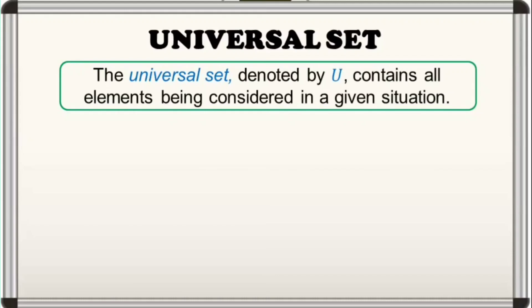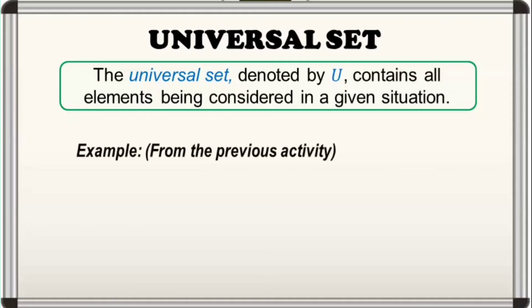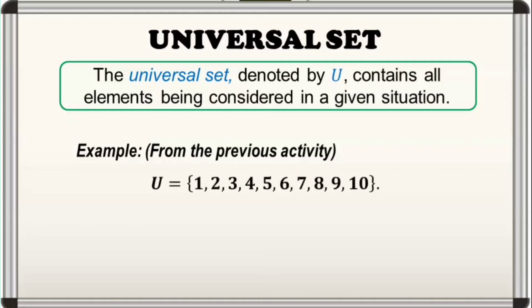Ano nga ba ang ibig sabihin ng universal set? The universal set contains all the elements being considered in a given situation and is denoted by a capital letter U. Going back to our previous activity, we have considered only the numbers written on the chips. So the universal set is set U which contains the counting numbers 1 up to 10.